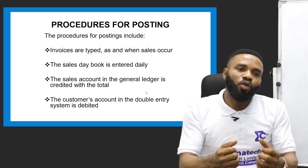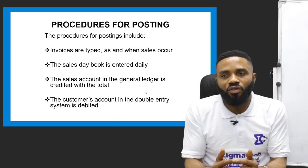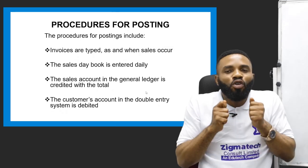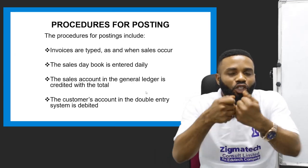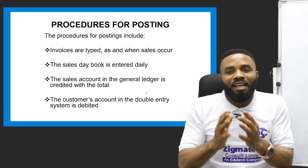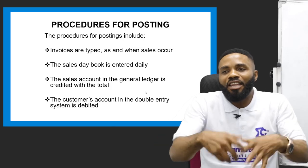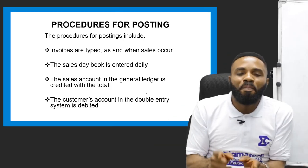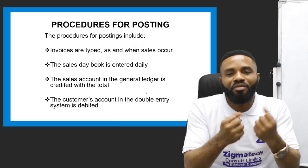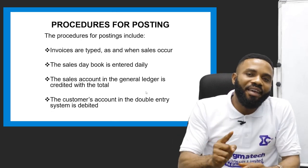The last procedure is that the customer's account in the double entry system is debited. In double entry, you give to decrease and receive to increase. Because we are selling — giving out items of value — we must be credited. That is why we say: debit the receiver and credit the giver. Since we are the ones selling, we are credited. But when it comes to the customer's account, the customer must be debited because the customer is the one receiving.